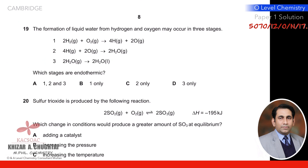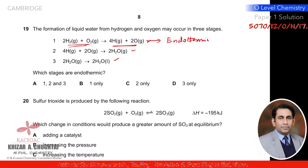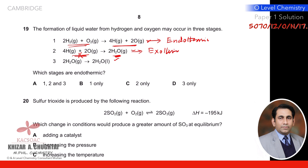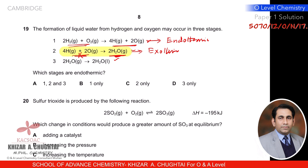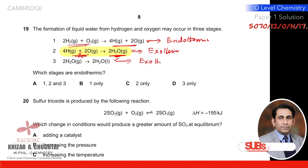Question nineteen: the formation of liquid water from hydrogen and oxygen occurs in three stages. Stage 1: bonds in H₂ and O₂ are broken — endothermic. Stage 2: atoms combine to form molecules — bonds form, so exothermic. Stage 3: gaseous steam cools to become liquid water — also exothermic. The only endothermic stage is stage 1. So the answer is B (stage 1 only).